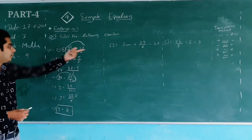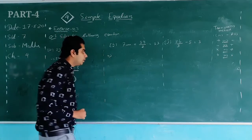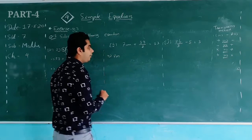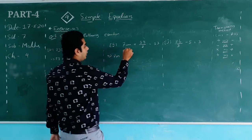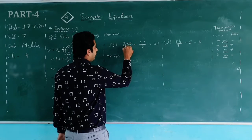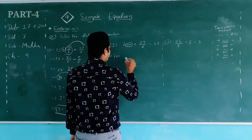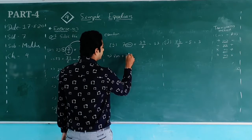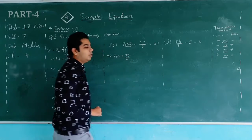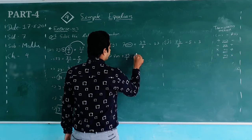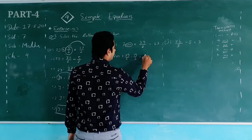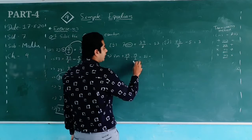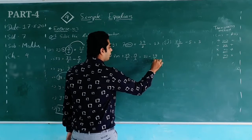Now I will show how to solve the same type of equation using the separation of variable method. See question 1(j): 7m = 13 + 19/2. Our variable is m, and we need to separate it. Using the separation method, I subtract 19/2 from both sides. On the left: 7m − 19/2; on the right: 13 − 19/2.